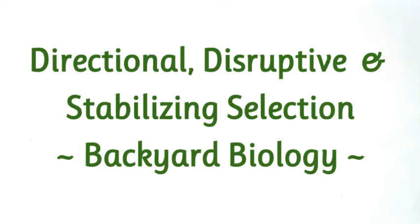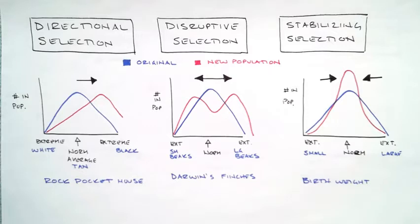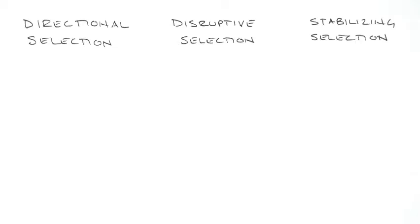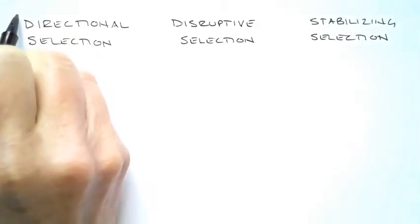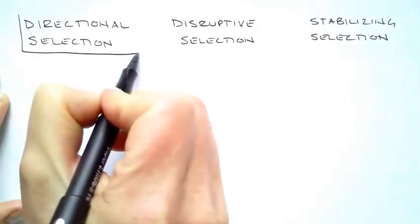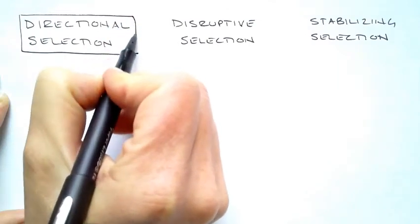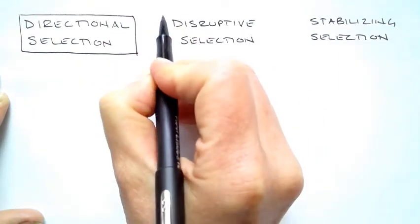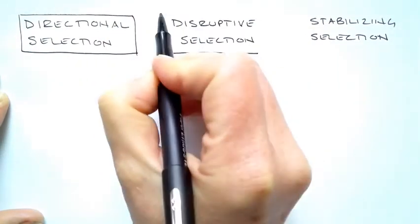Hi guys, we're going to be talking about three types of selection today. The three types of selection: the first one is called directional selection, meaning it goes in a direction. The next one is disruptive selection, meaning it's interrupted.